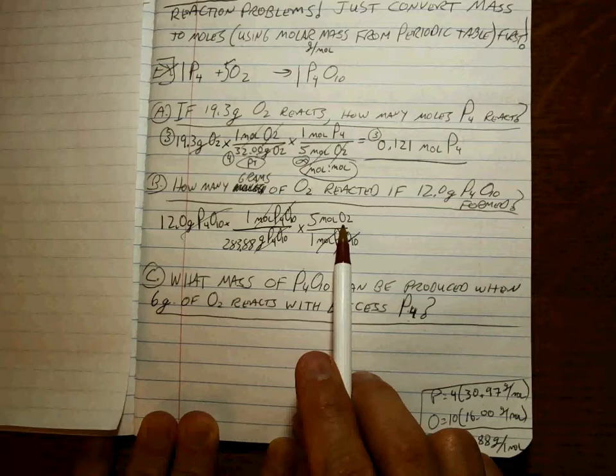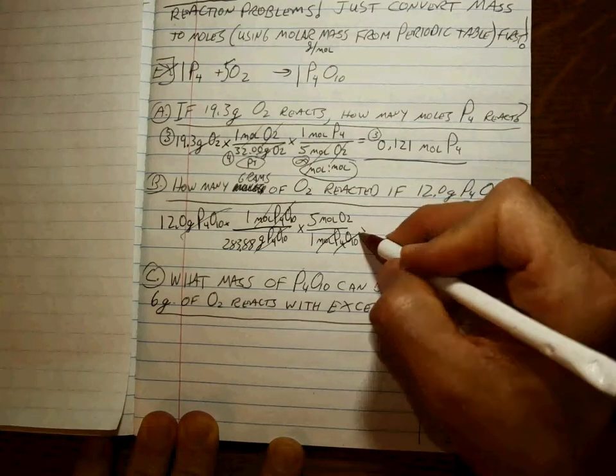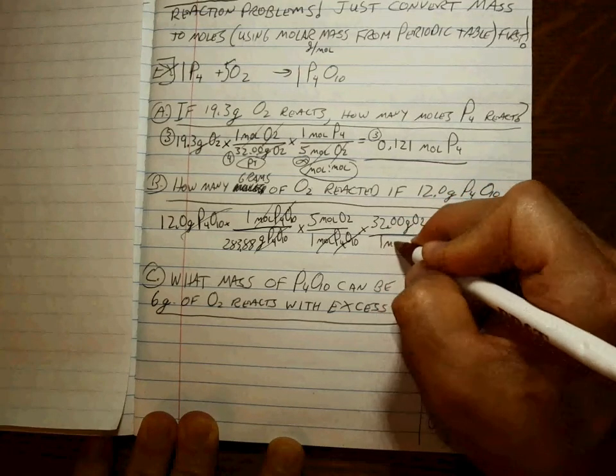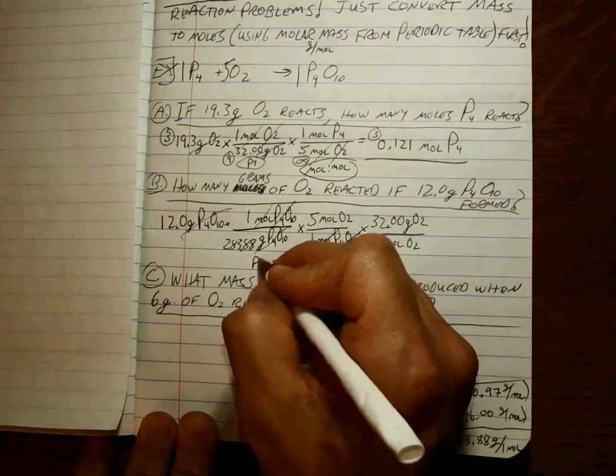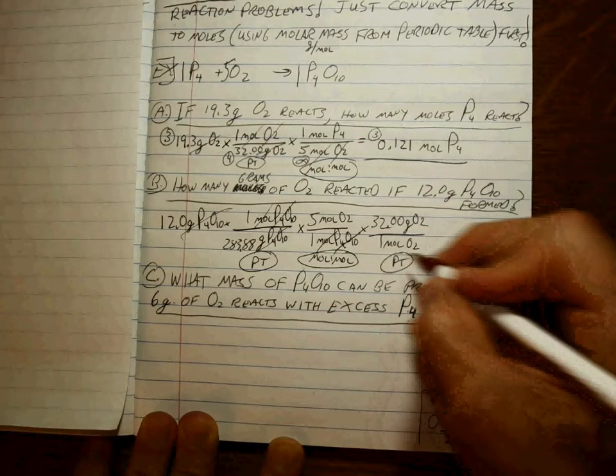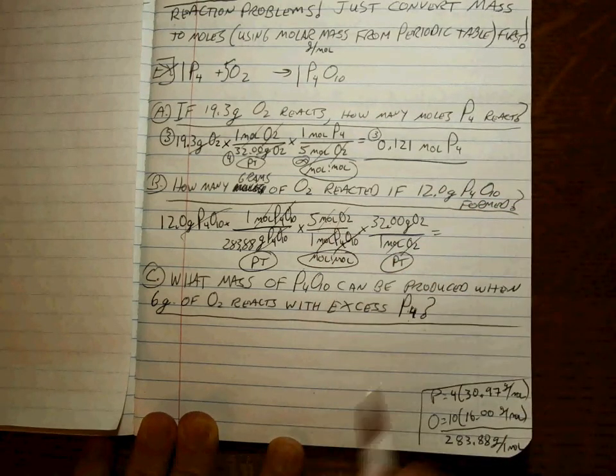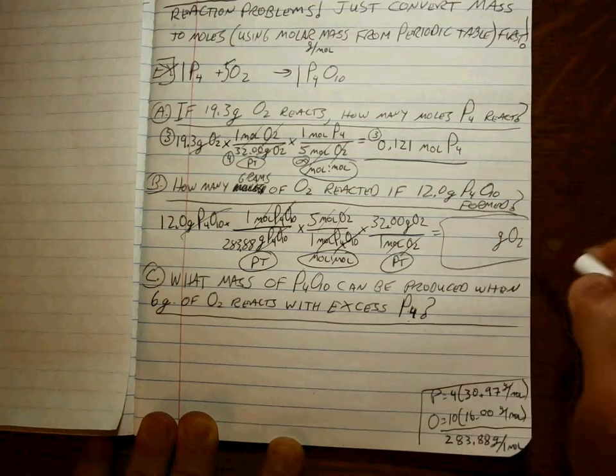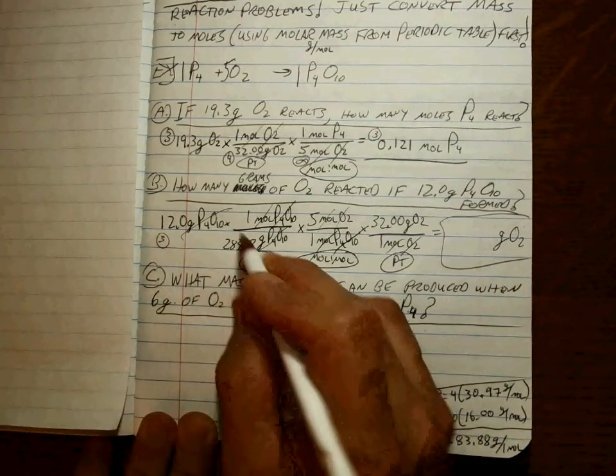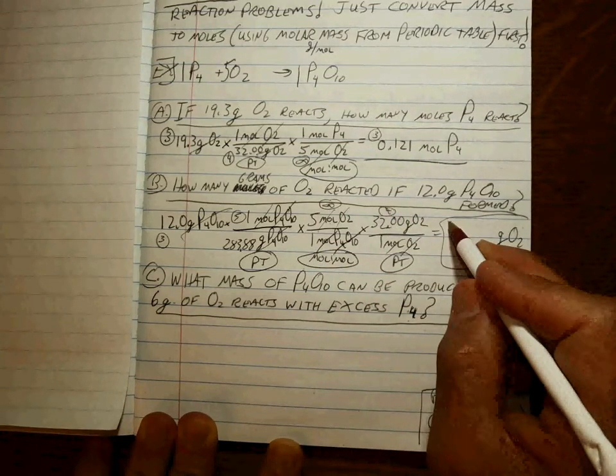Now we're at moles of O2, but we don't stop because they want to know how many grams of O2. How do you get from moles to grams? Same way. 32.00 grams of O2 per every one mole of O2. So this is a periodic table step. This is the mole-to-mole ratio step. This is a periodic table step. Molar mass. Moles of O2 cancel out. I'm left with grams of O2, which is what I want. How many grams of O2? There they are. Three sig figs. Five sig figs. Infinite sig figs. And four leaves me with three sig figs in my answer.